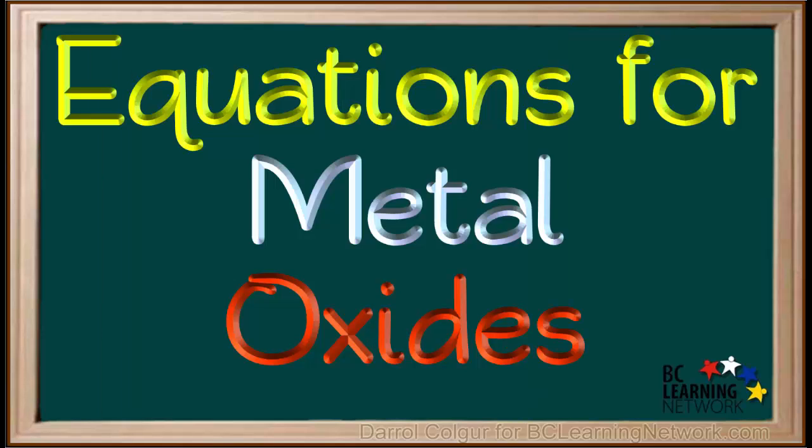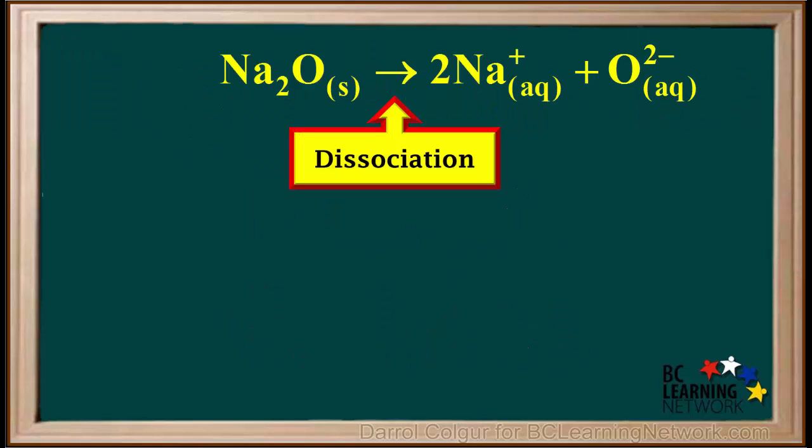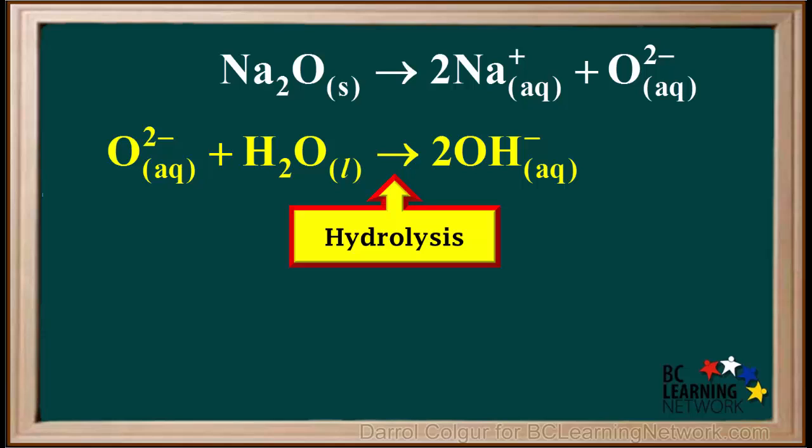Now we'll look at a few equations we can write for metal oxides reacting with water. We'll consider the case of adding sodium oxide to water. The dissociation equation is Na2O gives 2Na+ plus O2-. The oxide ion then reacts with water to form two hydroxide ions. This is called hydrolysis.